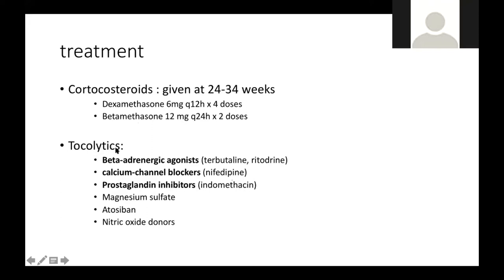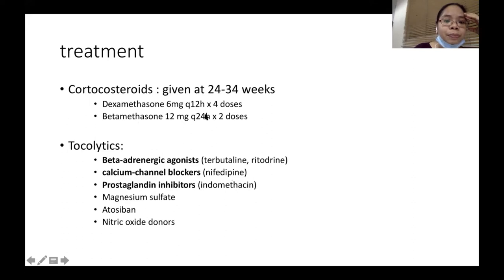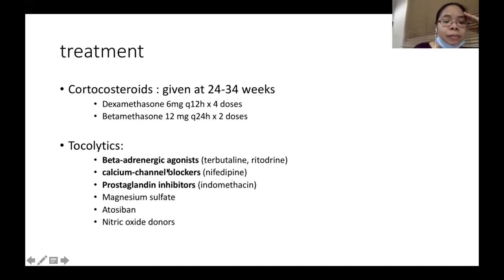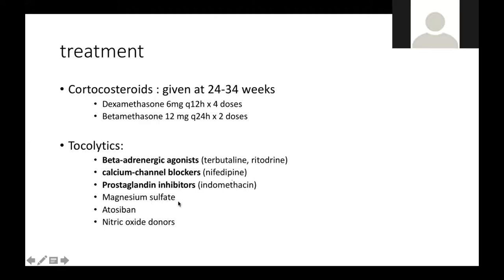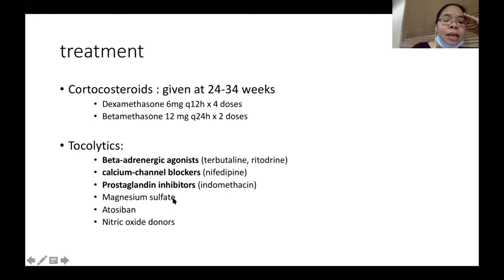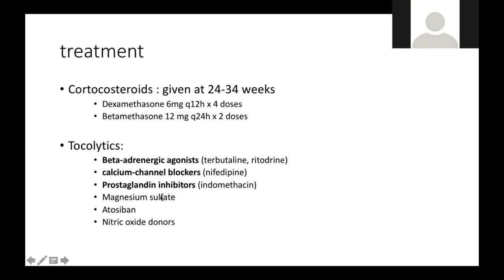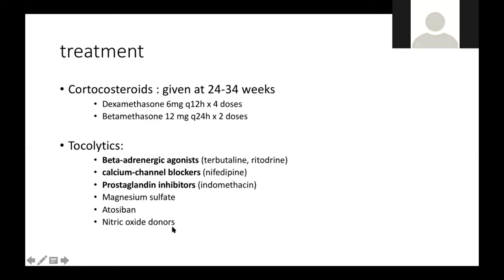Tocolytics are drugs given to stop contractions. The tocolytics include beta-adrenergic agonists, calcium channel blockers, prostaglandin inhibitors, and magnesium sulfate. Magnesium sulfate, which we give for eclamptic patients, can also be used as a tocolytic to prevent or stop preterm labor. You can also give atosiban and nitric oxide donors.